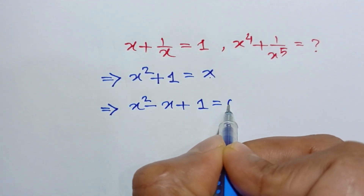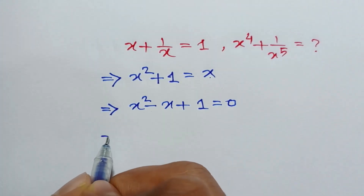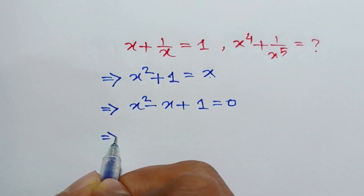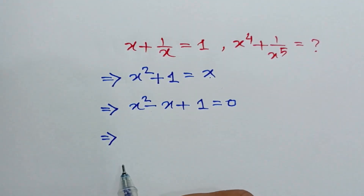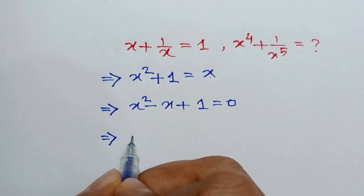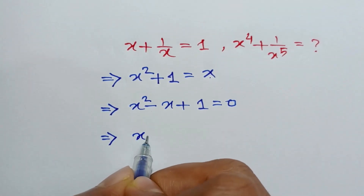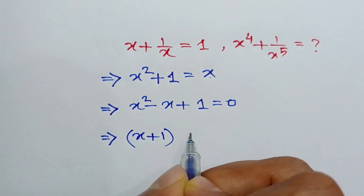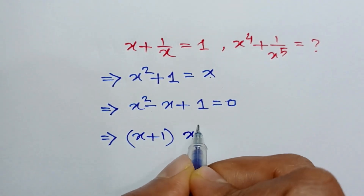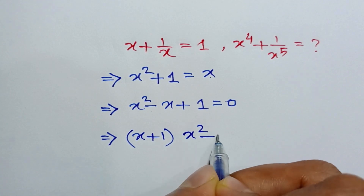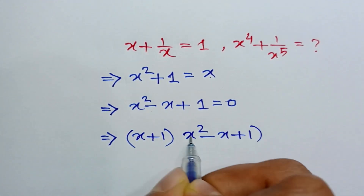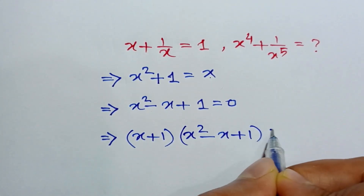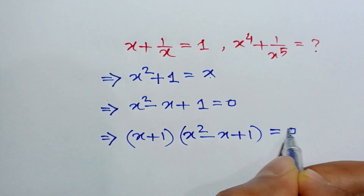So x squared minus x plus 1 is equal to 0. Or multiplying both sides by x plus 1, we can write x plus 1 times x squared minus x plus 1 is equal to 0.